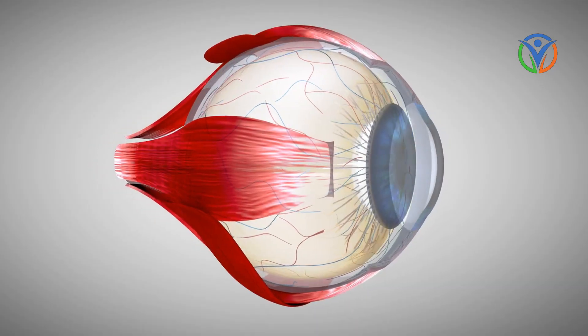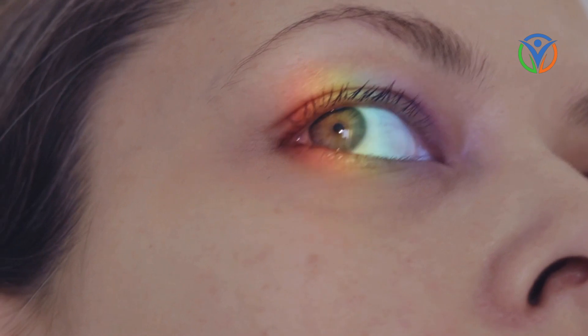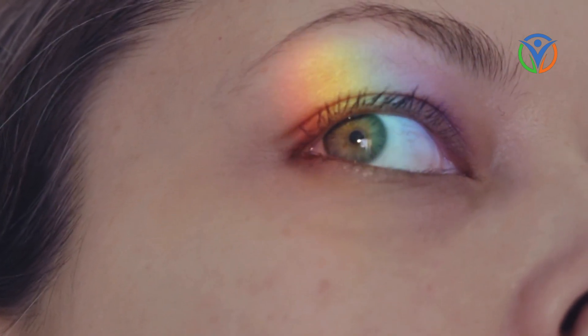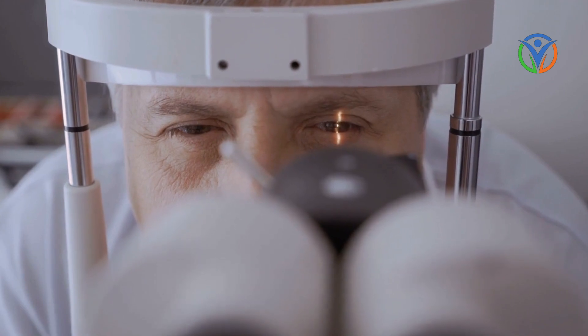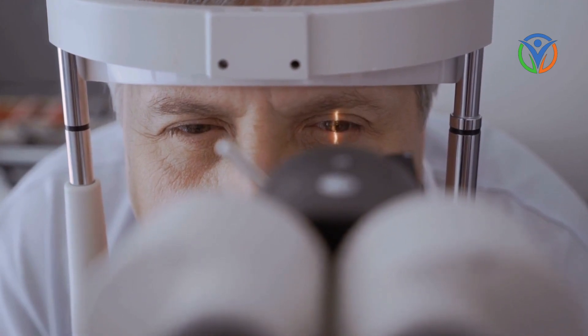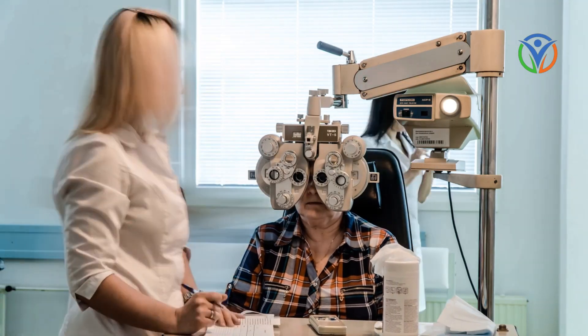Myopia (nearsightedness), hyperopia (farsightedness), and astigmatism (blurred vision) are refractive errors that affect the way light focuses on the retina. These conditions can result from a combination of genetic and environmental factors, such as excessive near work or inadequate lighting. We'll discuss vision correction options, including glasses, contact lenses, and refractive surgery, to address these refractive errors effectively.